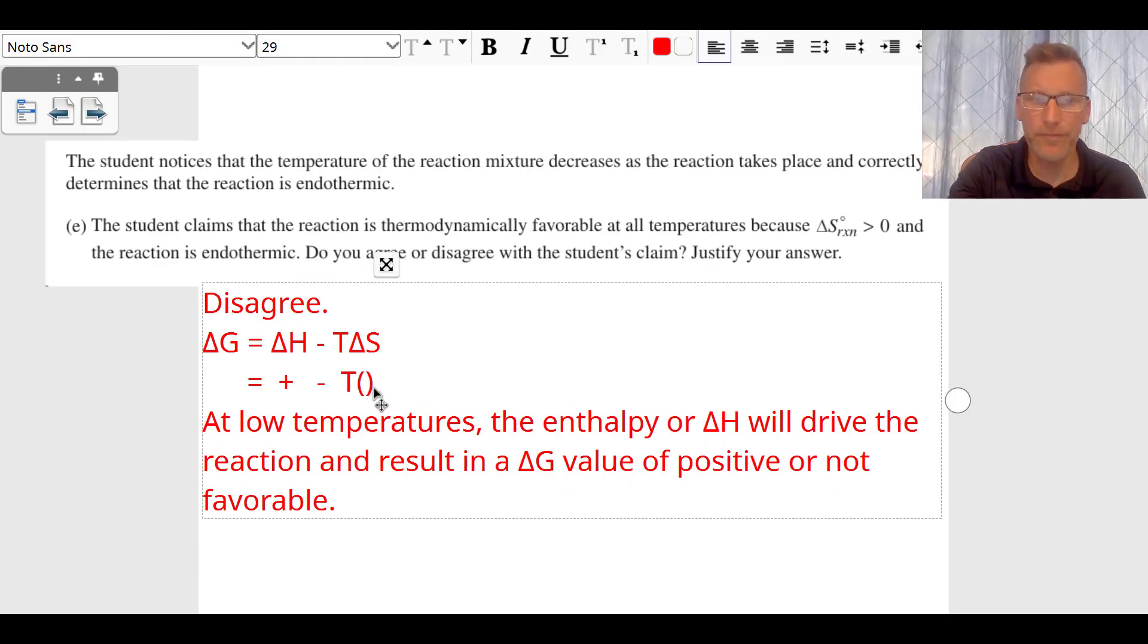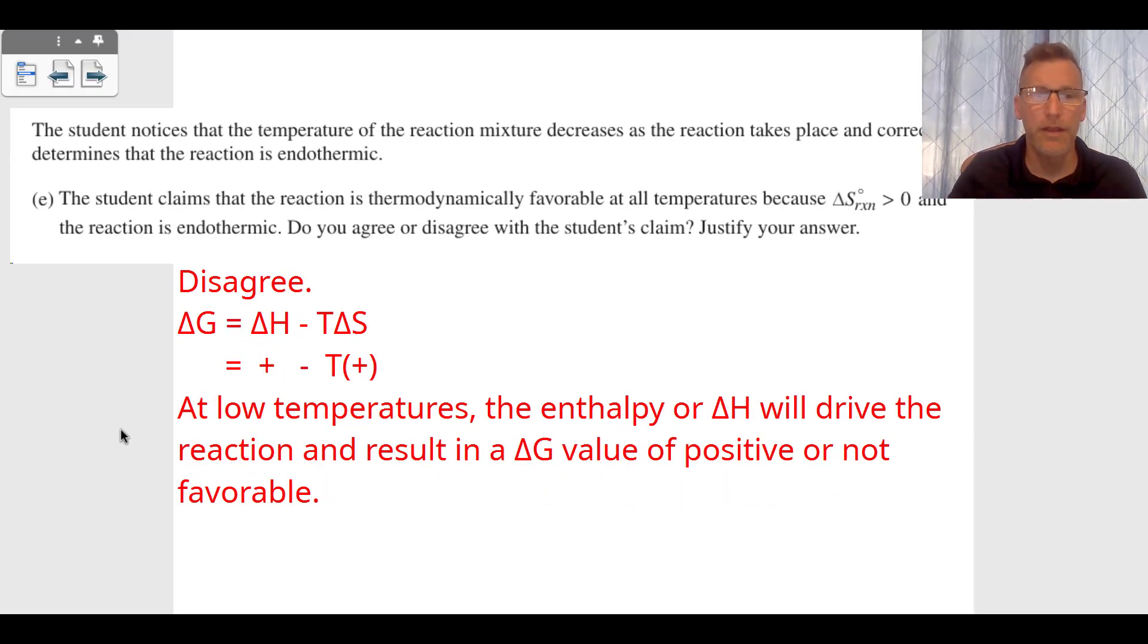The ΔS is positive—we're going toward more entropy—but the negative TΔS term is negative at really high temperatures, which means it's favorable at high temperatures.